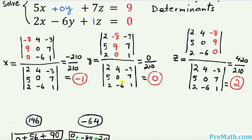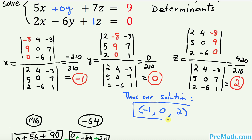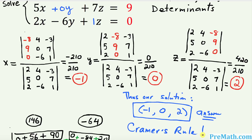So our solution to this system turns out to be negative 1, 0, 2. This method is called Cramer's Rule, and most students enjoy it because it is super easy and hassle-free. Thanks for watching — if you like this video, please share with your family and friends. Thank you so much, bye.